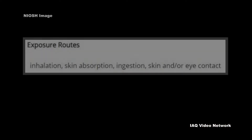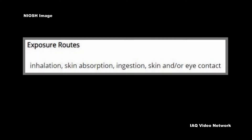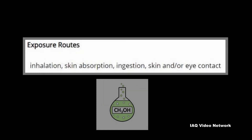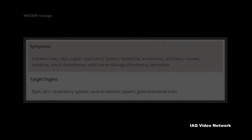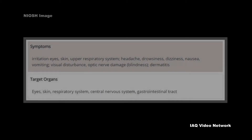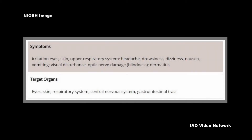NIOSH reports that methyl alcohol is a poisonous substance that can be absorbed through the eyes, skin, lungs, and digestive system. Overexposure can cause death. As such, workers in industries that use methyl alcohol may be harmed by exposure, with the level of harm depending upon the dose, duration, and work being done.